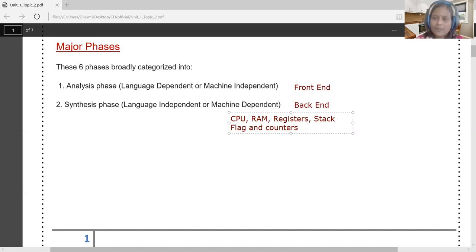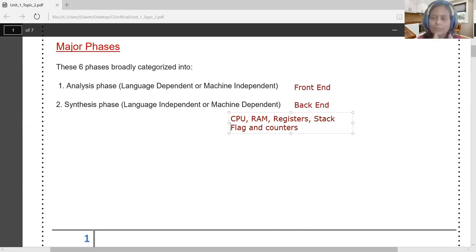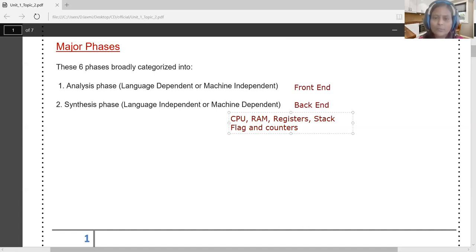The back end, or synthesis phase, is dependent on the machine architecture, whereas the front end or analysis phase requires no concern about the machine architecture, register types, flags, counters, stack memory, RAM, or CPU execution patterns. The analysis phase is highly dependent on the source language, while the synthesis phase is machine-dependent.